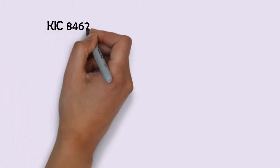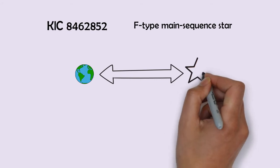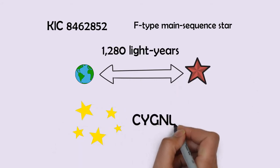Tabby's star or KIC 8462852 is an F-type main-sequence star. It's approximately at a distance of 1280 light-years from the earth and is located in the constellation of Cygnus.